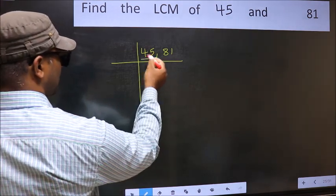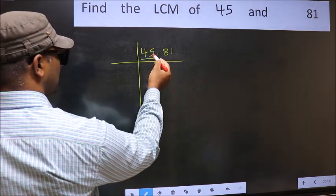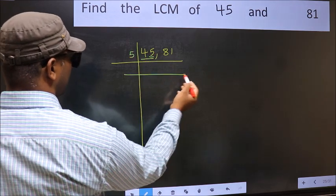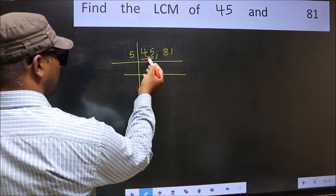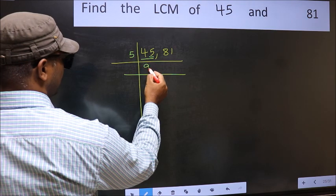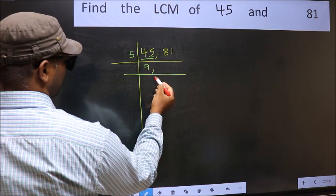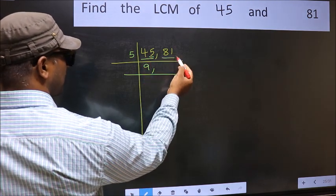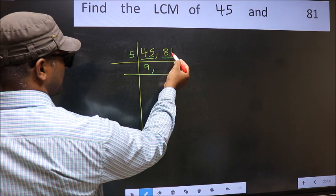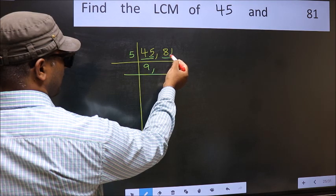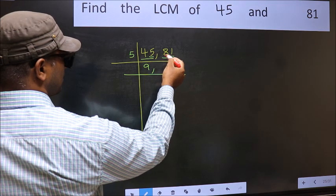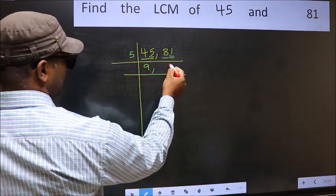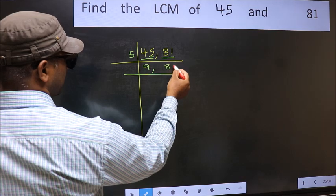The last digit of 45 is 5, so we take 5 as our divisor. In the 5 times table, 5 nines are 45, so 45 divided by 5 is 9. The other number, 81, has a last digit that is neither 0 nor 5, so it is not divisible by 5 — write it down as it is.